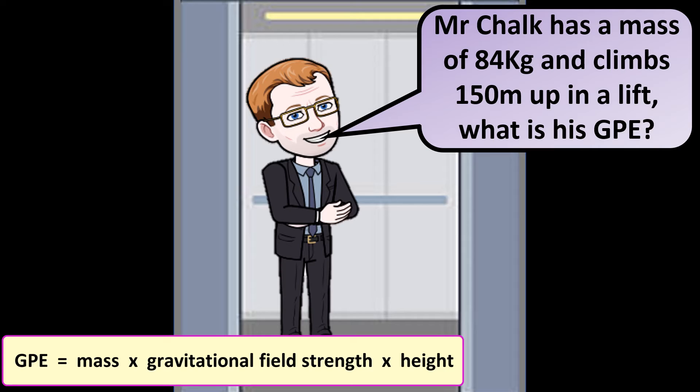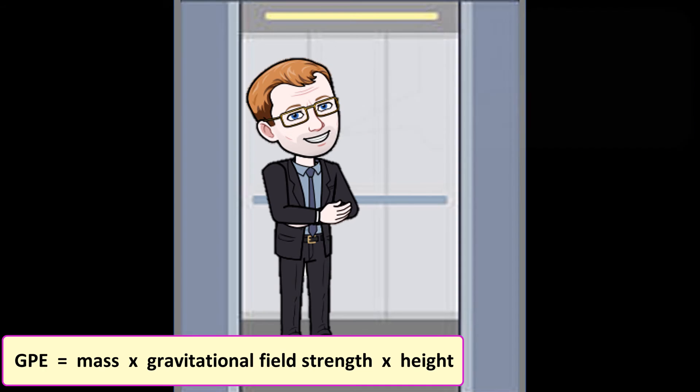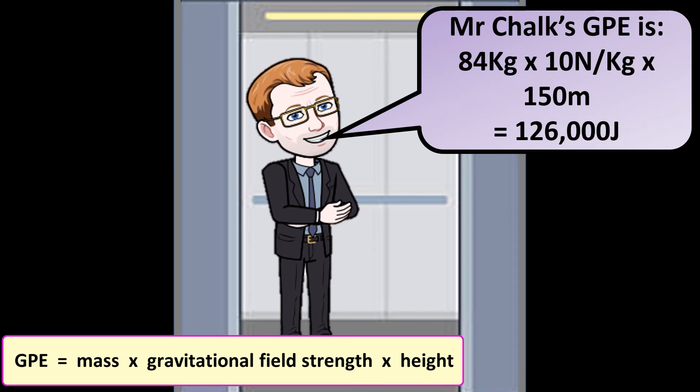If I climb 150 meters up in a lift, what would be my GPE? That's going to be 84 times 10 times 150, which gives 126,000 joules.